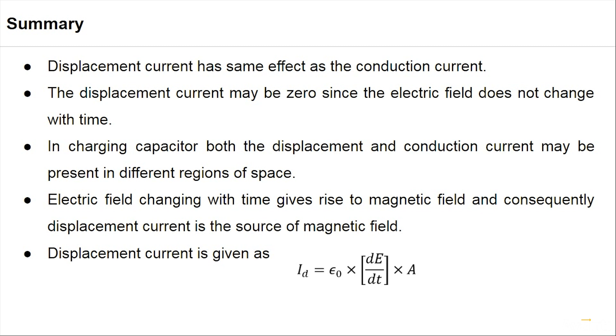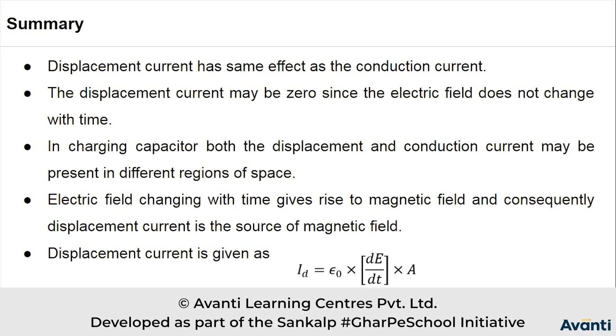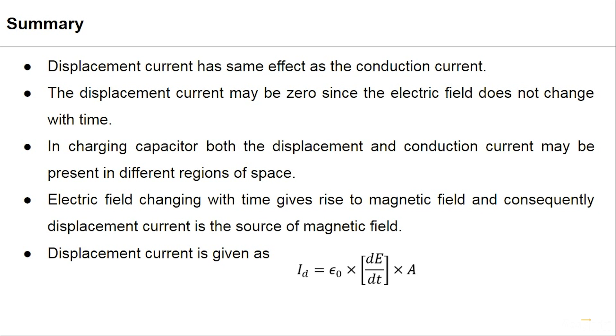Electric field changing with time gives rise to magnetic field and consequently displacement current is the source of magnetic field. This is the most important thing of this entire part: that electric field changing with time produces magnetic field, and because there is magnetic field, it means there is some current, and that current is called displacement current. And the magnitude of displacement current is epsilon 0 times dE by dt into area. So that is the end of part 1.